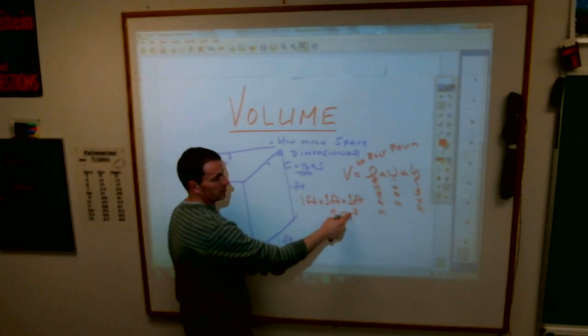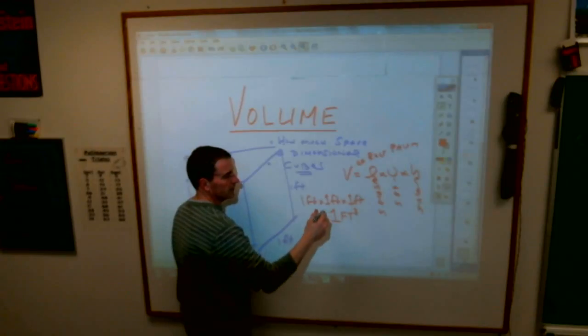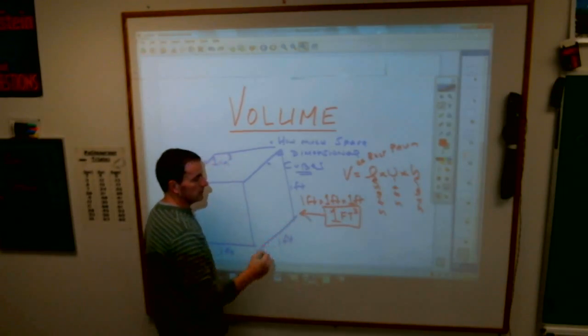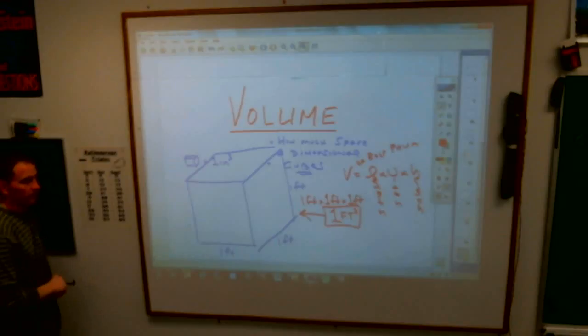There's three of them getting multiplied together. One foot cubed, that's a cubic foot, is a foot by a foot by a foot.